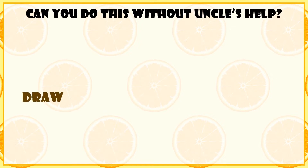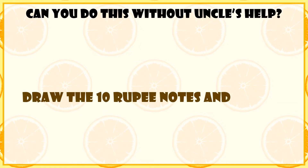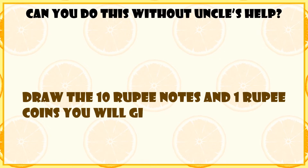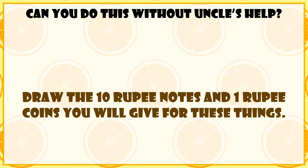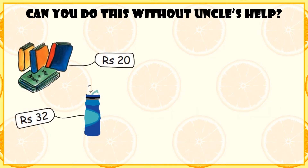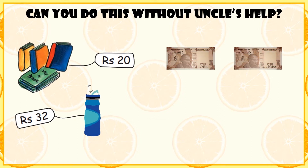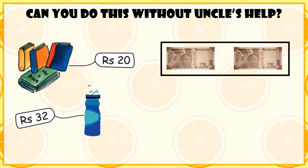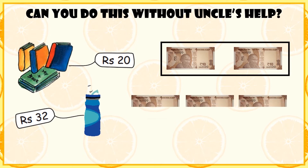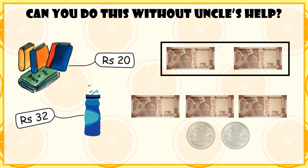Can you do this without uncle's help? Draw the 10 rupee notes and 1 rupee coins you will give for these things. Books cost 20 rupees — 2 ten-rupee notes make 20 rupees. Next is a bottle costing 32 rupees — 3 ten-rupee notes and 2 one-rupee coins make 32 rupees.